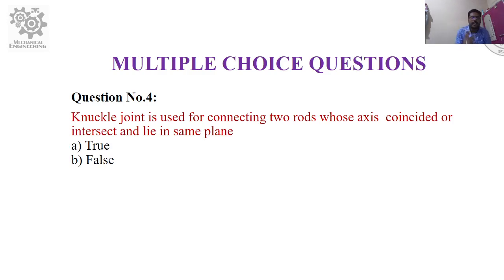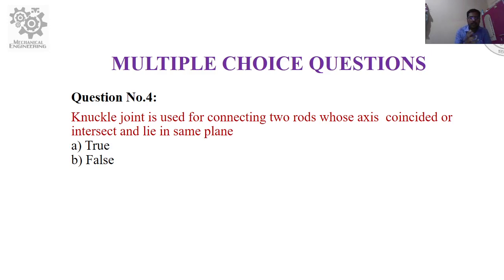Question number four: A knuckle joint is used for connecting two rods whose axes coincide or intersect and lie in the same plane — true or false? Give your answers and keep them in mind.